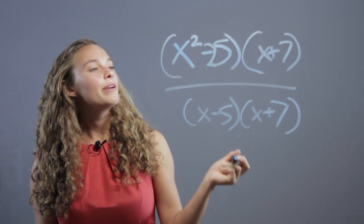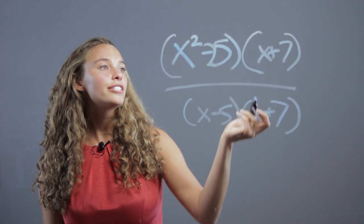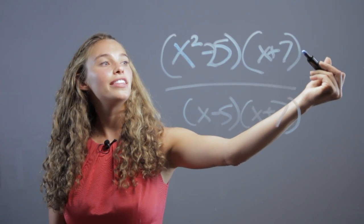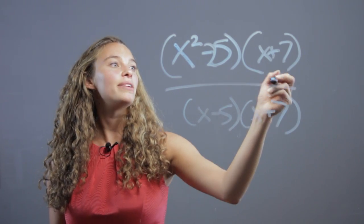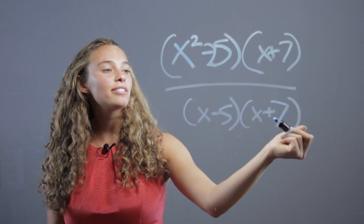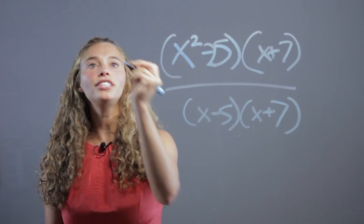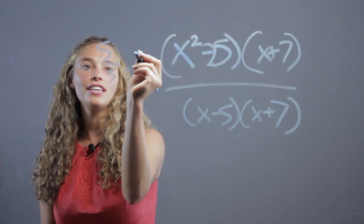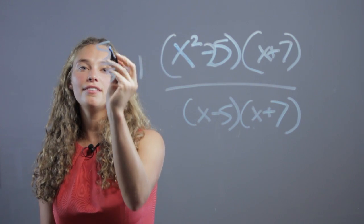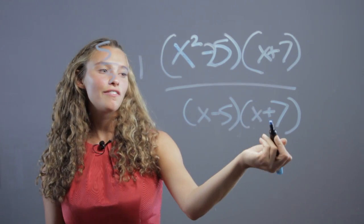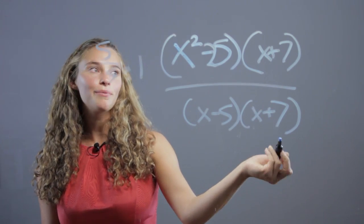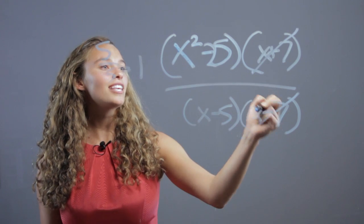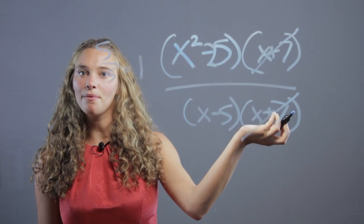Now, we want to simplify first by crossing off things that we see in the numerator that are the same as the denominator. So, x plus 7 over itself — just like 5 over 5 equals 1 — x plus 7 over x plus 7 equals 1. So we can cross off the x plus 7s because that's just like multiplying by 1.